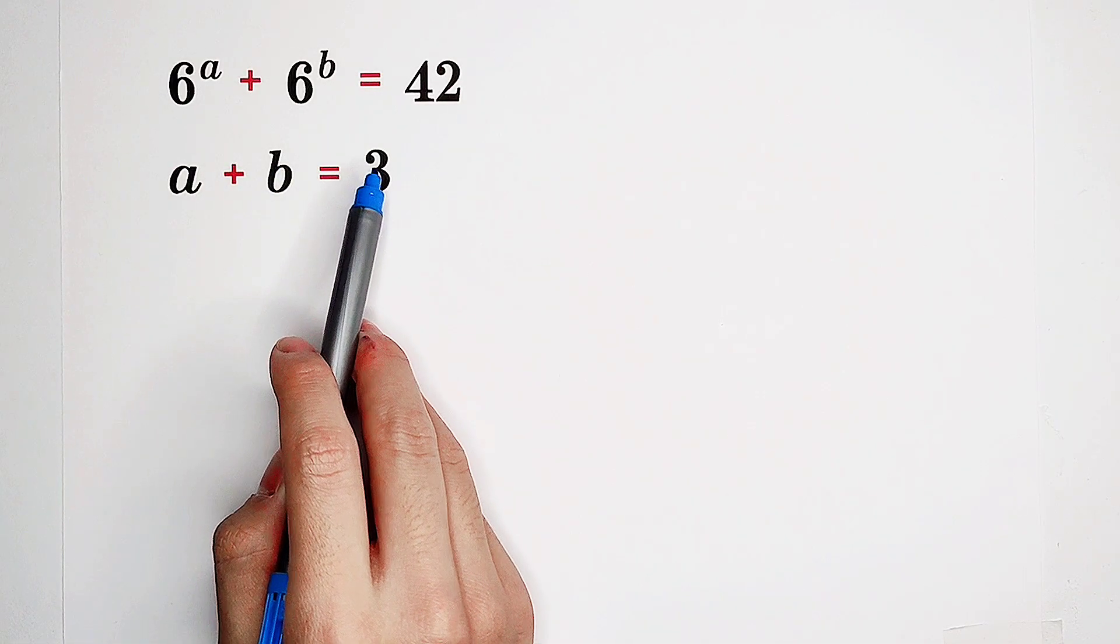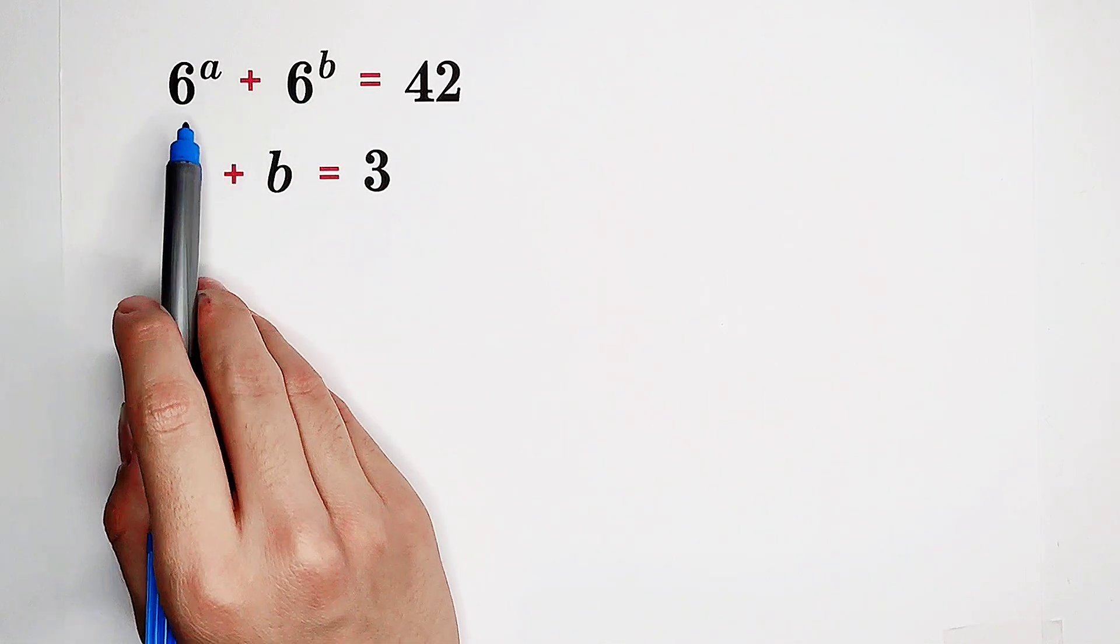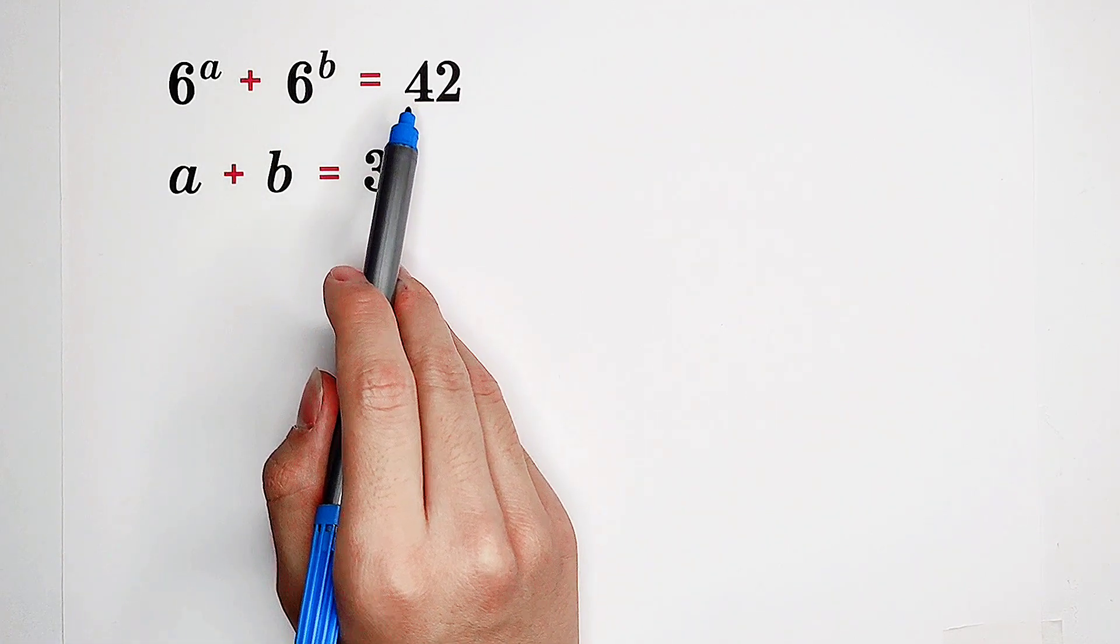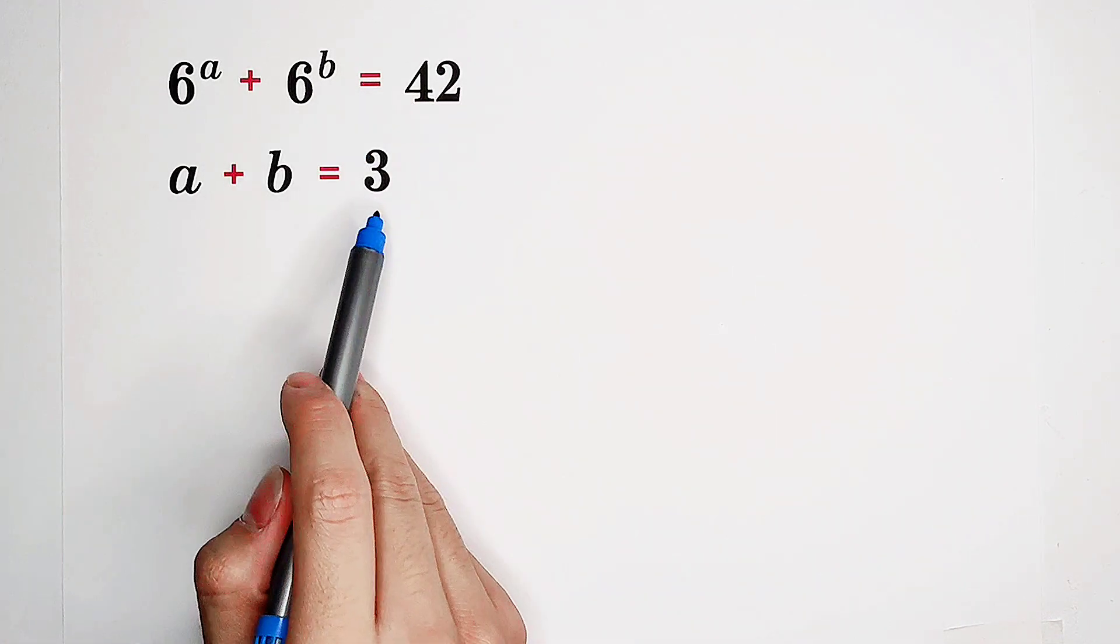Solve the system of equations about A and B. 6 to the power of A plus 6 to the power of B equals 42. A plus B equals three.